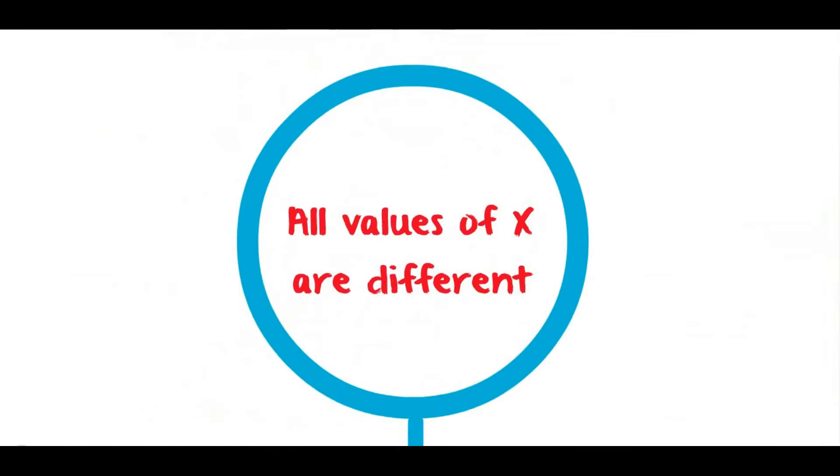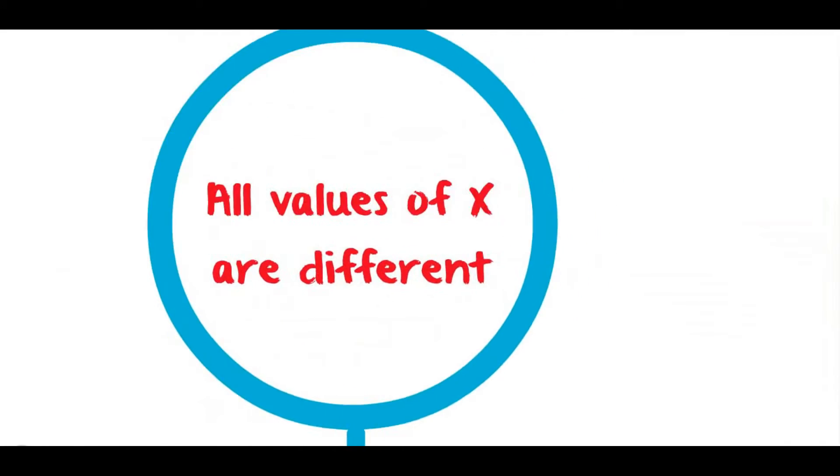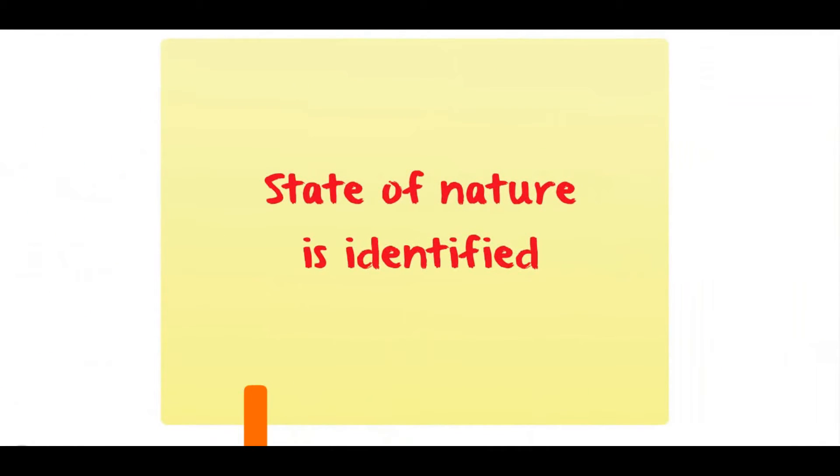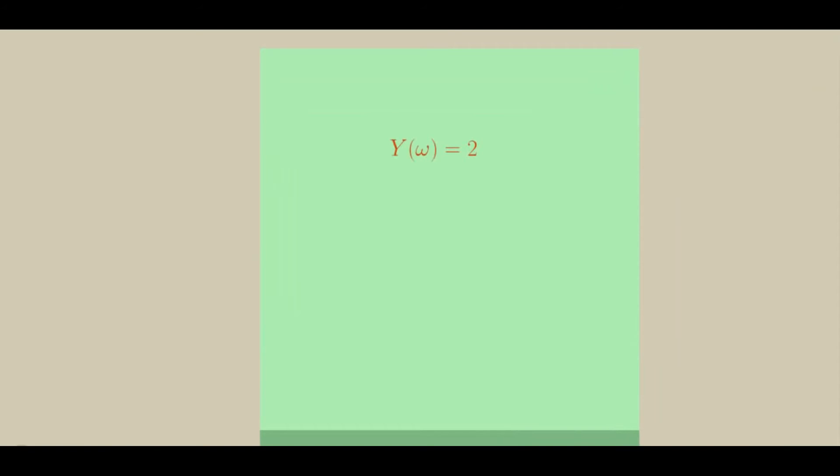Moreover, all possible values of x are different, and so the state of nature is identified once we observe the value x omega. Say we observe y omega equals 2. We cannot deduce if the true state is omega 2 or omega 4.